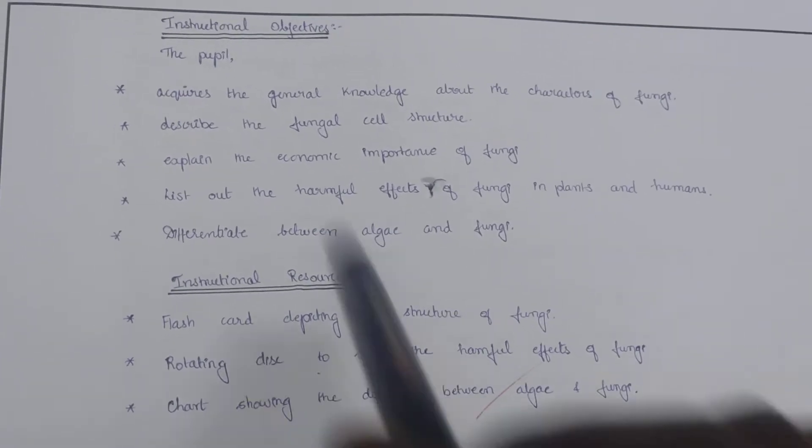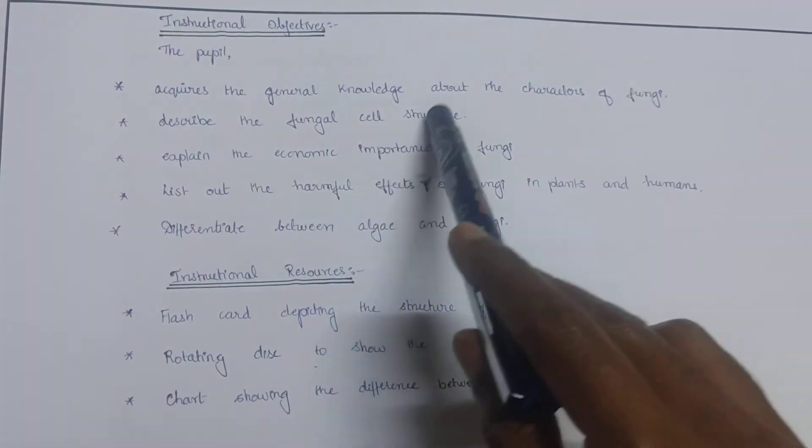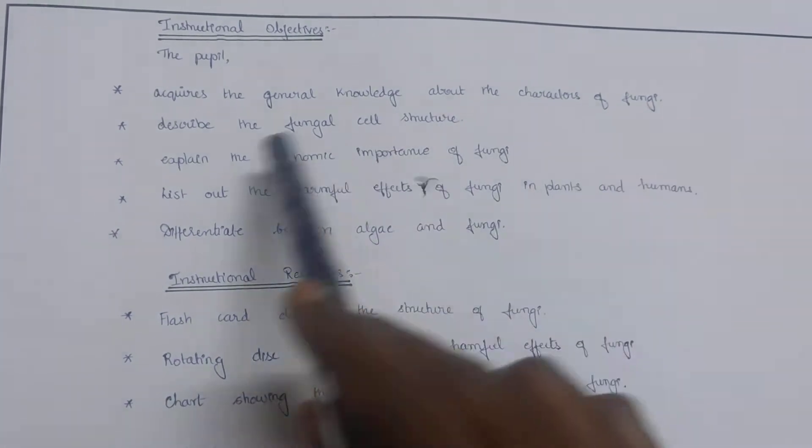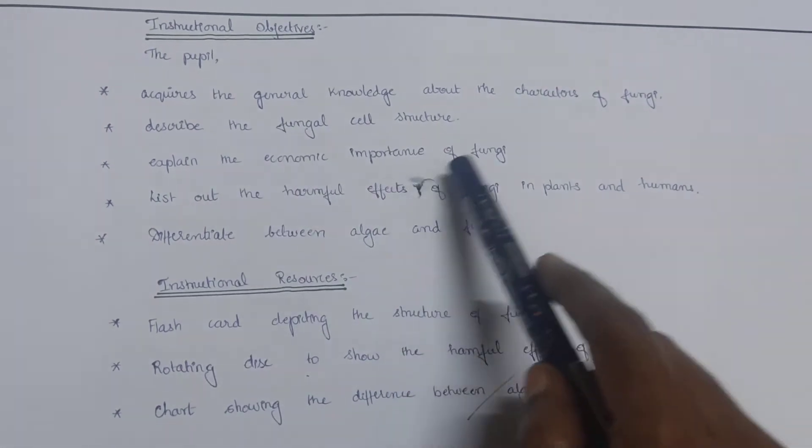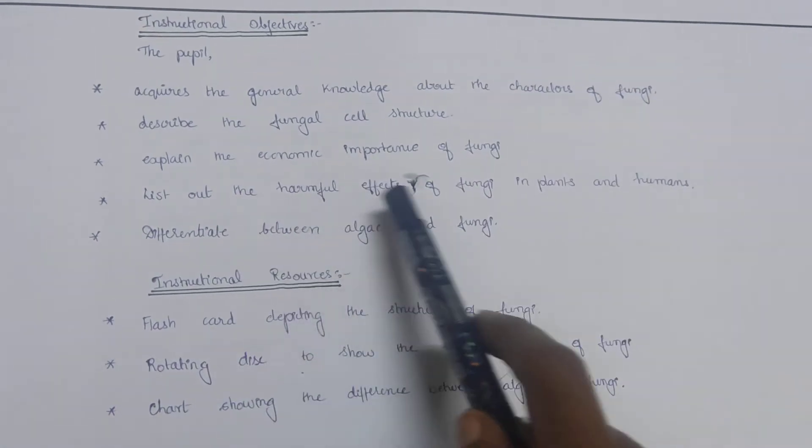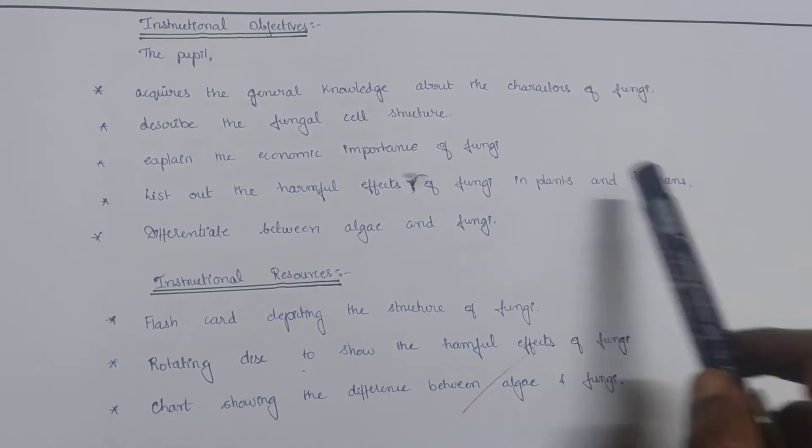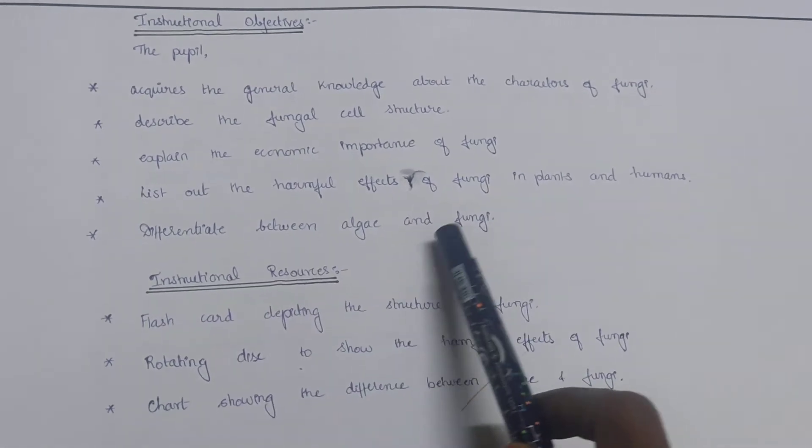Instructional objectives: the pupil acquires general knowledge about the characters of fungi, describes the fungal cell structure, explains the economic importance of fungi, lists out the harmful effects of fungi in plants and humans, and differentiates between algae and fungi.